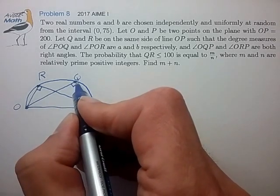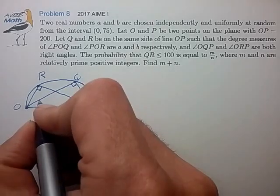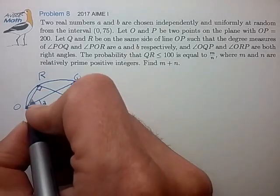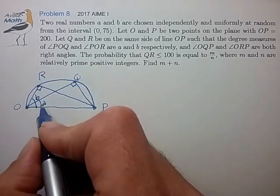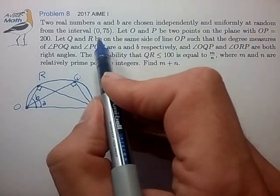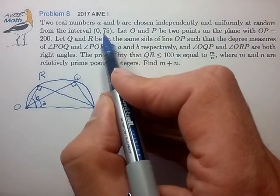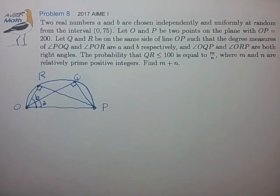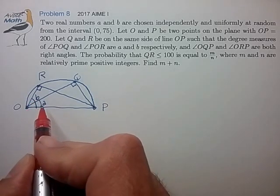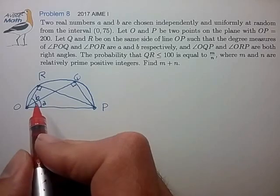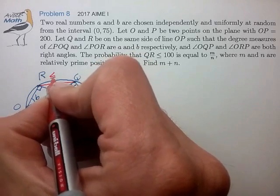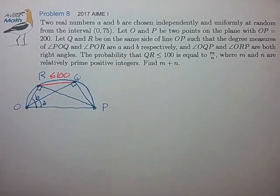We're also told that angle QOP is angle A and angle ROP is angle B, and angles A and B are selected uniformly at random from the interval 0 to 75. We're trying to figure out how we can relate this angle information to the probability that line RQ is less than length 100.